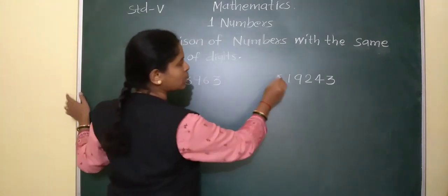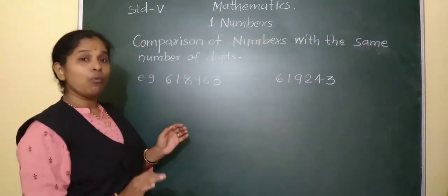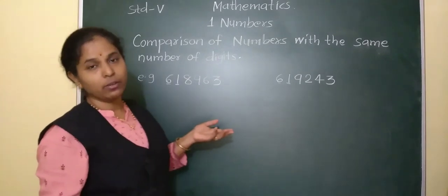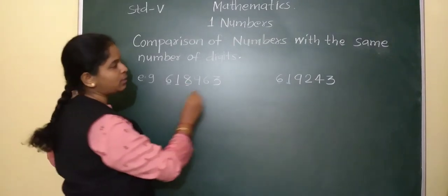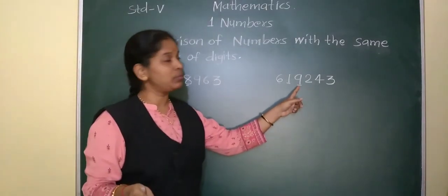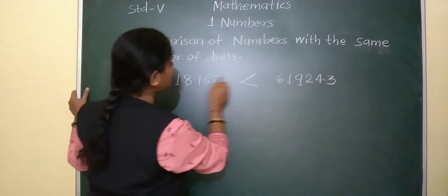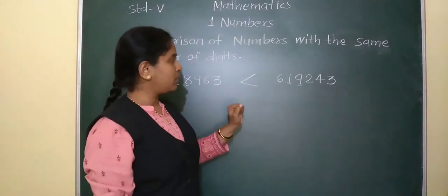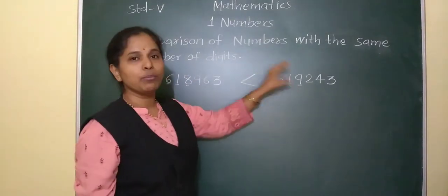Here, 6 is there and here also 6 is there — in both numbers the first place digit is 6, so they are equal. Move to the second place: here 1 is there and here also 1 is there — equal again. Then at the third place, here is 8 and here is 9. Now 9 is the greater digit, so the number with 9 at this place is greater than the other. We start comparing each digit from both numbers from the left side.